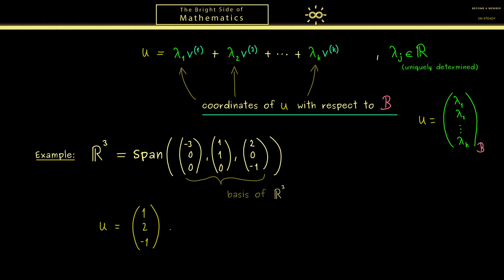However we already see which linear combination we can choose to get to the vector u. We immediately get the correct linear combination if we start here at the bottom with the third coordinate. Because in order to get the -1 there we need the third vector here once. And then in order to get the 2 here we need the second vector twice.